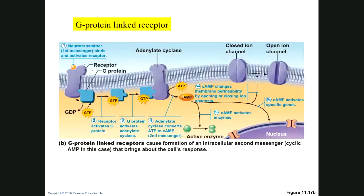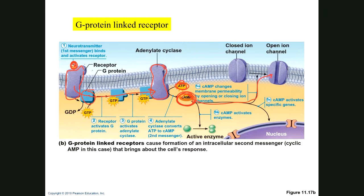In indirect action, the receptor is just a protein on the postsynaptic neuron, not an ion channel. The neurotransmitter binds to the receptor, activating a G protein, which activates the enzyme adenylate cyclase, which produces cyclic AMP from ATP. Cyclic AMP then opens an ion channel. So the ion channel is opened not directly by the neurotransmitter, but by cyclic AMP formed through the G-protein cascade.